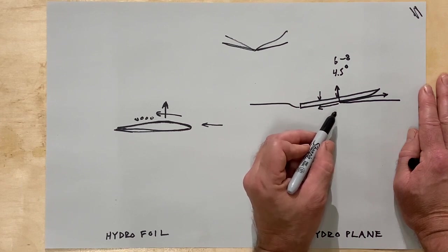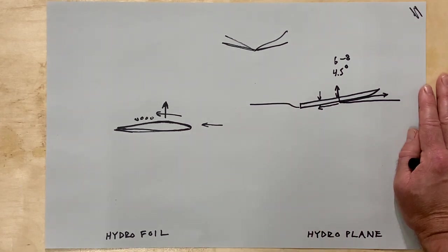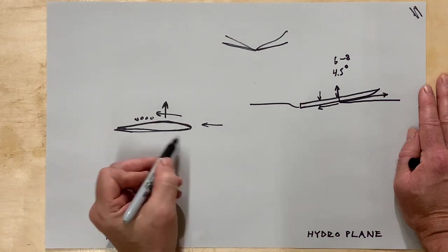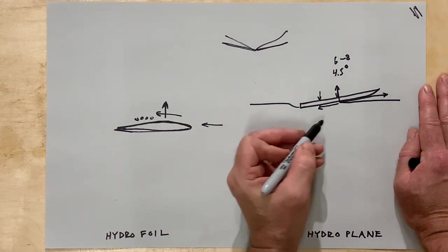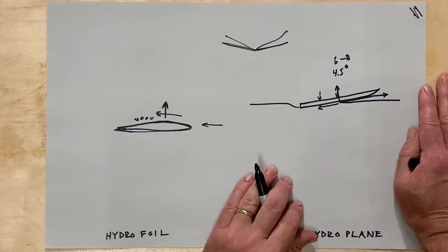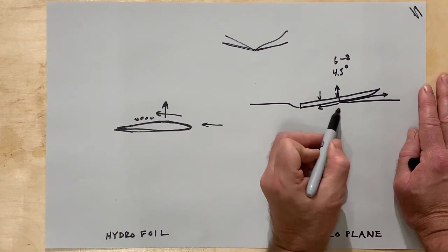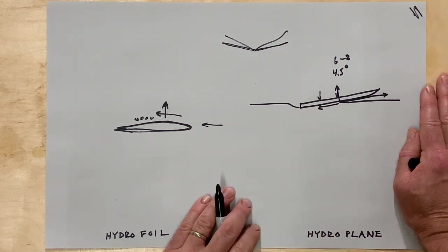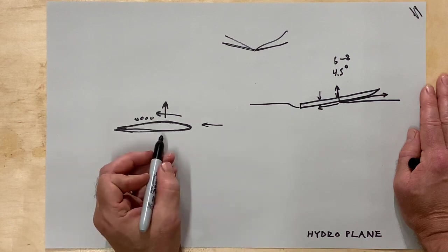And the drag increases at a rate less than the square of the velocity. So with everything else the drag increases with the square of the velocity, but with a hydroplane it increases slower. So the speed potential for any hydroplaning surface is actually higher than an underwater hydrofoil.